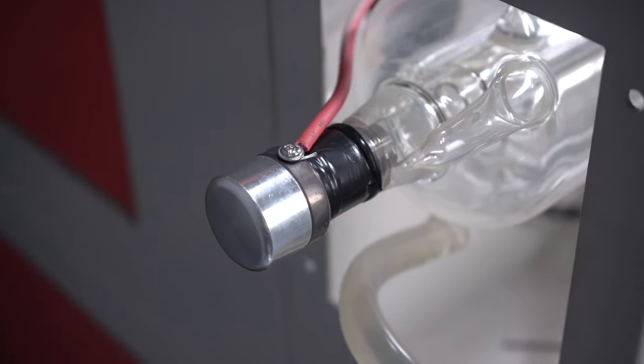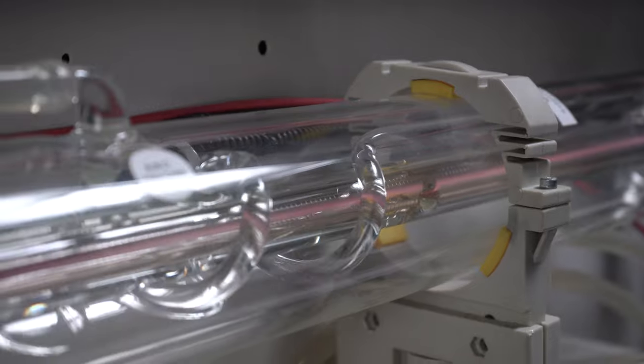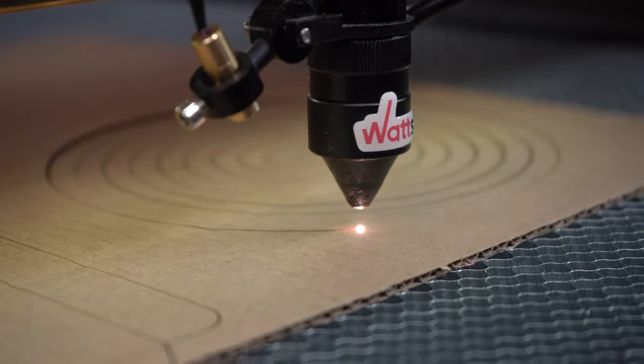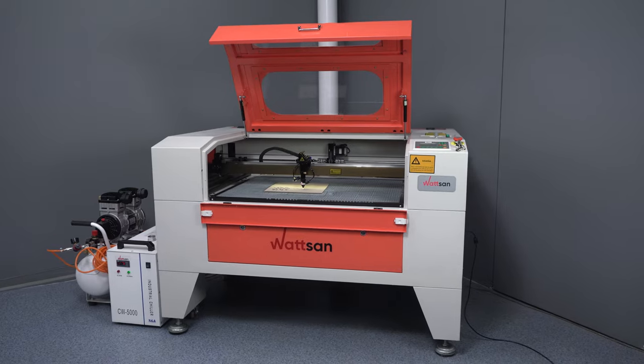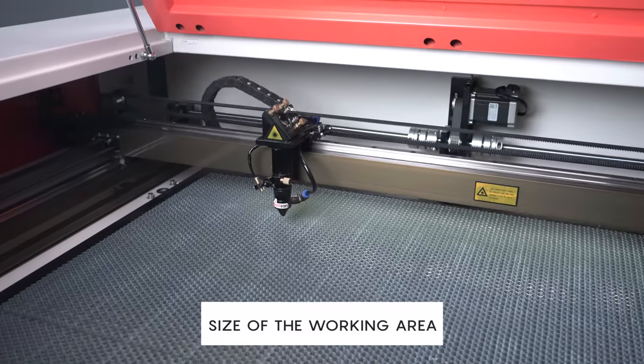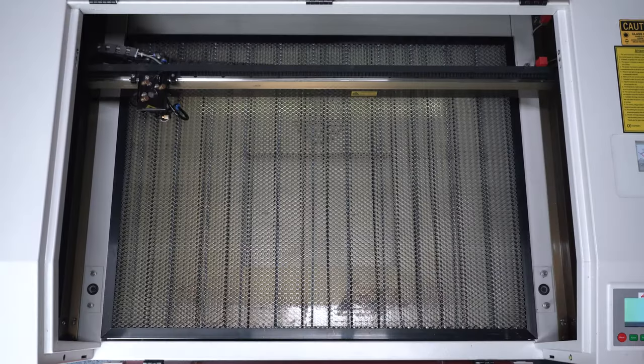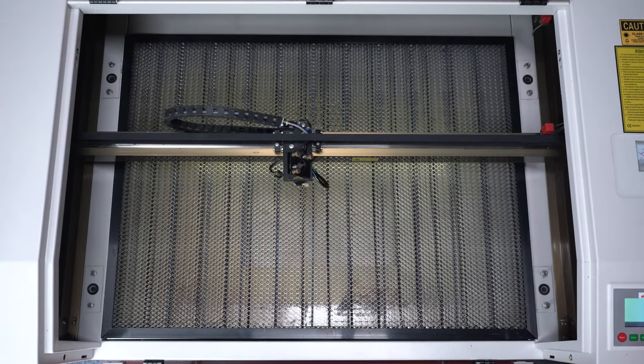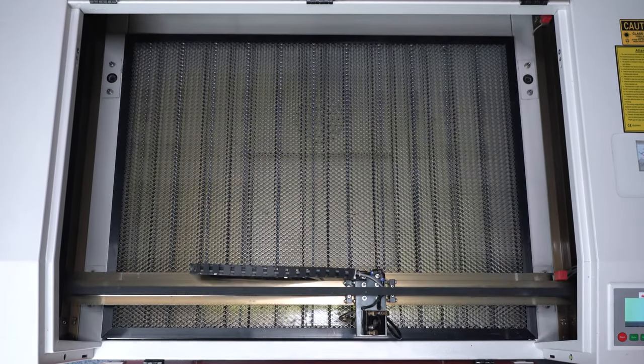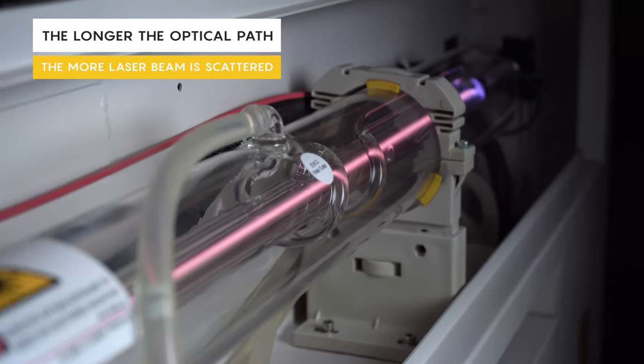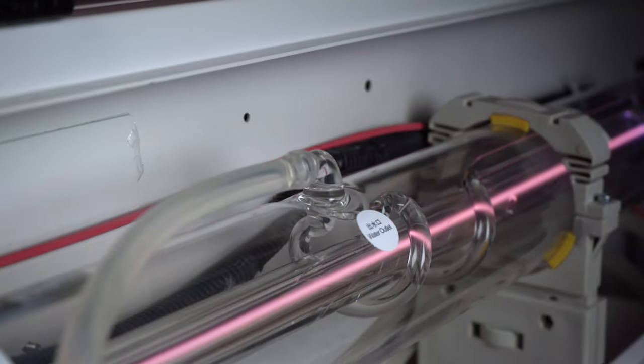It is important to remember that the required laser tube power does not only depend on the thickness of the material or the desired working speed. The size of the working area of the machine must be taken into account too. It determines the distance the laser beam travels, the optical path. The longer the optical path, the more the laser beam is scattered, losing its penetrating power.